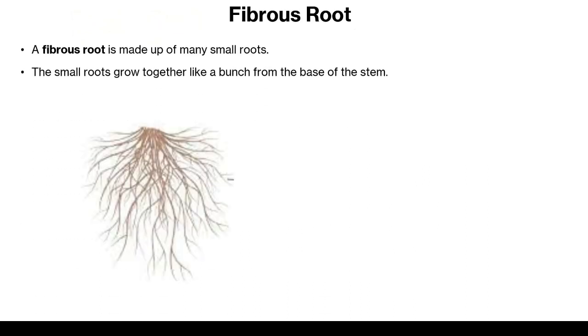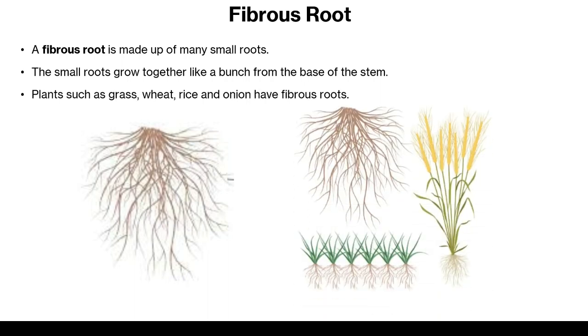A fibrous root is made up of many roots. The small roots grow together like a bunch from the base of the stem. Plants such as grass, wheat, rice and onion have fibrous roots.